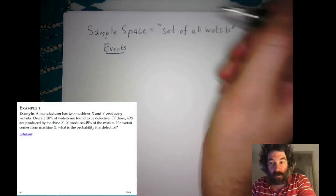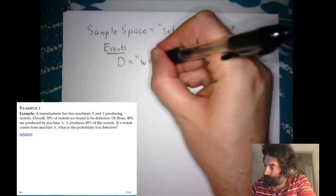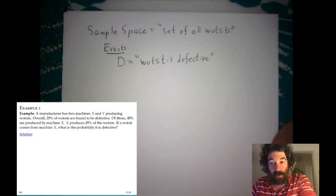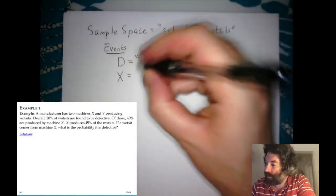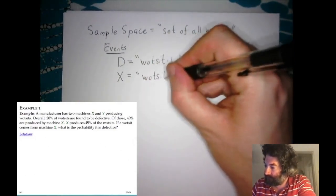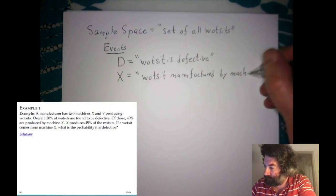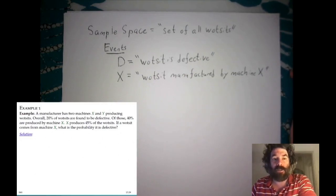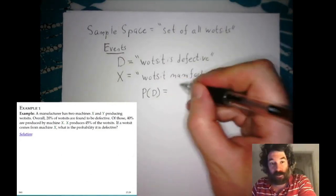The events relevant for this problem are: first, the event D, in which the widget we select is defective. Then the other relevant event is X — the event that the widget we select was manufactured by machine X. The question gives us information about the probability of these events. First, overall 20% of widgets are found to be defective, so the probability that a randomly selected widget is defective is 0.2.